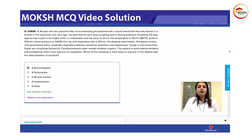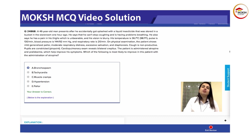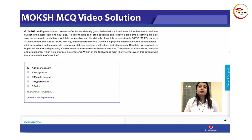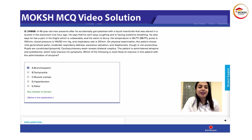There is a mnemonic for organophosphate poisoning: DUMBELS. That stands for diaphoresis, urination, miosis — miosis being the pinpoint pupils — then B for bronchospasm and excessive bronchospasm. Then you have excessive lacrimation and salivation. Bronchospasm is something that this patient was presenting with.